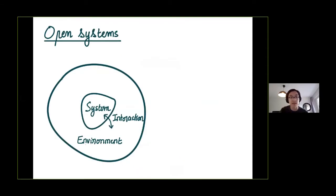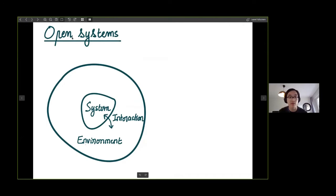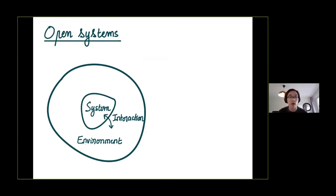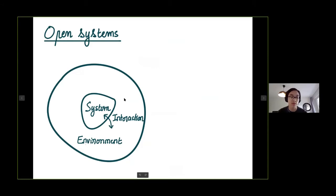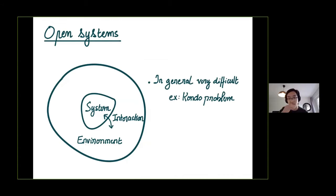Let me start by setting a bit the general background of what I want to talk about. This is a general picture that you can have in mind. You have a quantum system in contact with some kind of environment and there is interaction between them. In general, you will assume that the number of degrees of freedom in the environment is very large compared to the system. And in full generality, this is a very difficult problem.